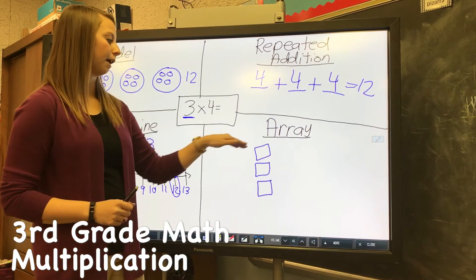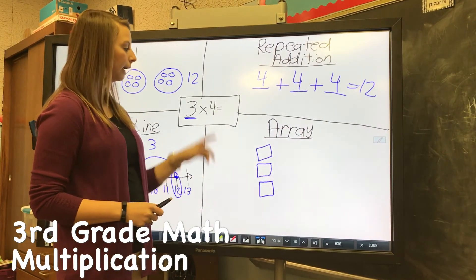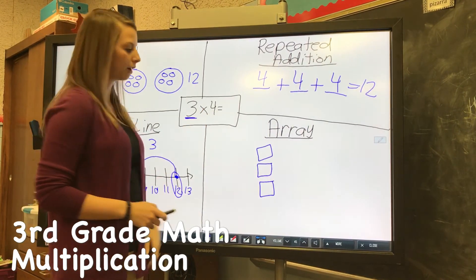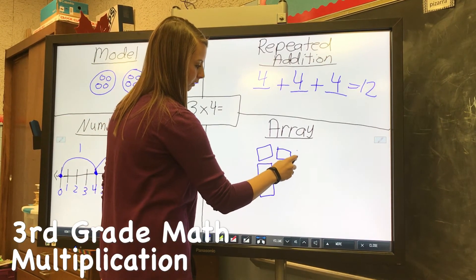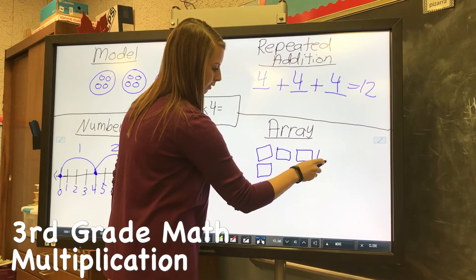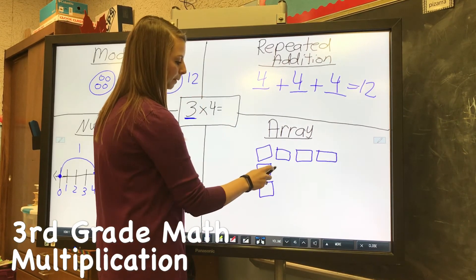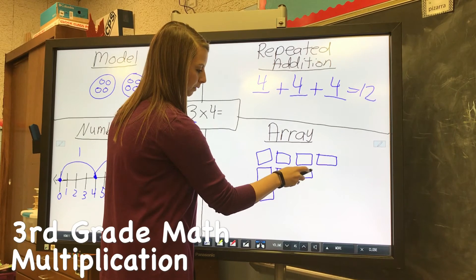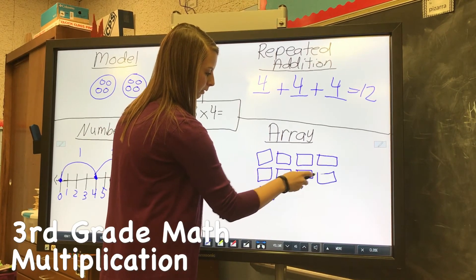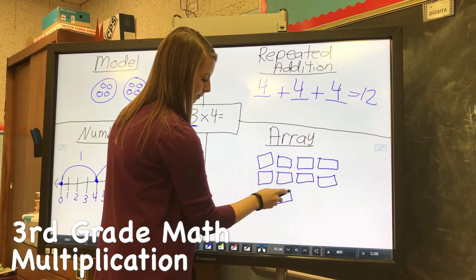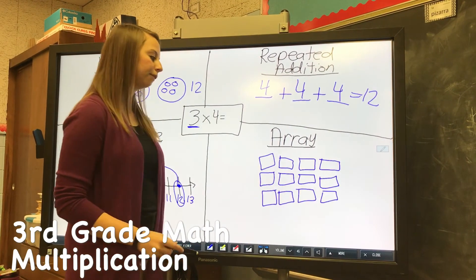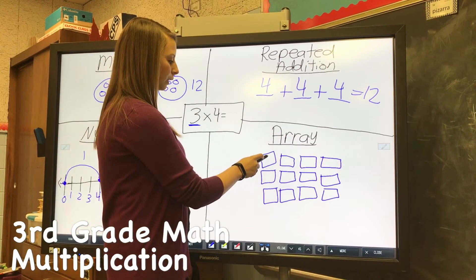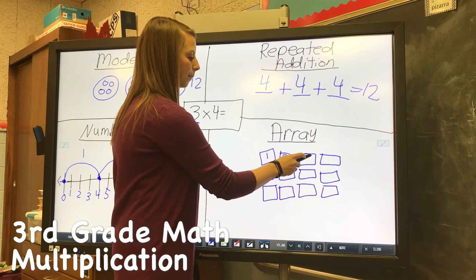And I'm going to have four in each row, so this is number one in the first row. I'm going to put four in each row. And then if you go back and count them you should have 12 as well.